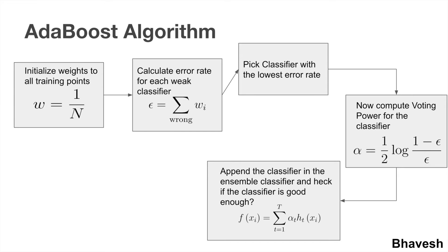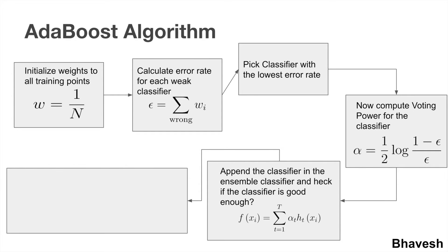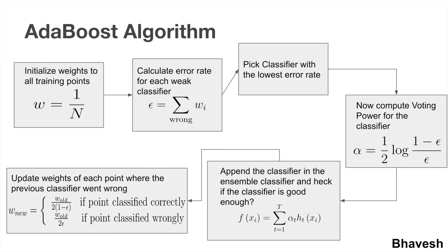I then ask myself: is f(x) good enough for making a strong prediction, have I gone through enough rounds, or are there no good classifiers left? One way to judge if you've completed enough rounds is to check if the best classifier has an error rate of 1/2. If not, the next step is to update the weight of every training point based on whether it was classified correctly or incorrectly by the previous classifier. If classified correctly, the weight goes down; if incorrectly, the weight goes up. You then repeat the process, iterating over this loop until you've built the best possible AdaBoost ensemble classifier.